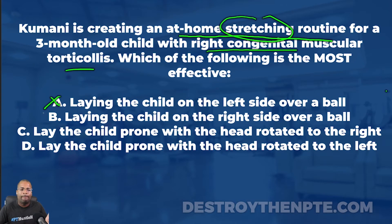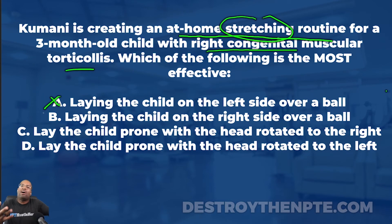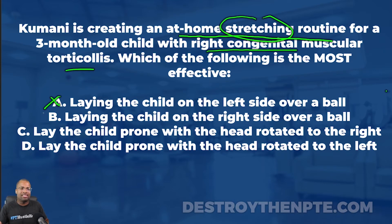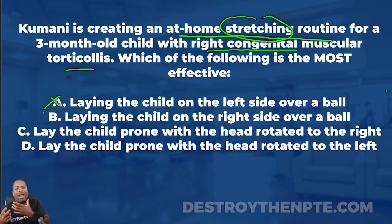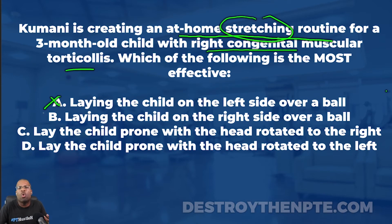Option B says laying the child on the right side over a ball. If we lay the child on the right side, we're going to activate the left SCM, pulling the head out of right side bend — I see how that could work. But the question says Kamani is creating an at-home stretching routine, not a strengthening routine. Laying a child on the right side over a ball is not going to stretch the right SCM; if anything, it activates the left SCM as more of an endurance or strengthening exercise. That's not what we want, so B gets an X.